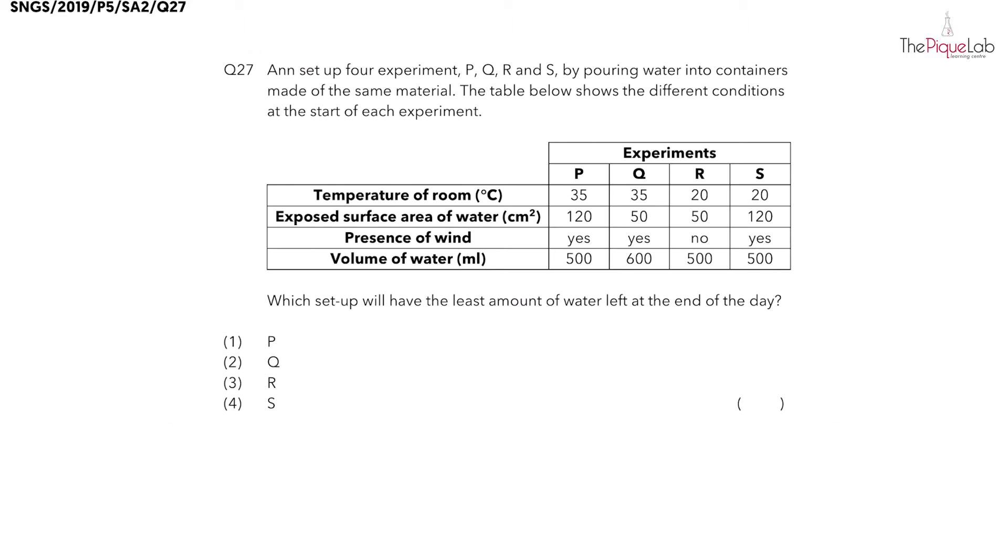Question 27: Four experiments P, Q, R, and S are set up by pouring water into containers made of the same material. The table below shows the different conditions at the start of each experiment. We are trying to find out which setup will have the least amount of water left at the end of the day.